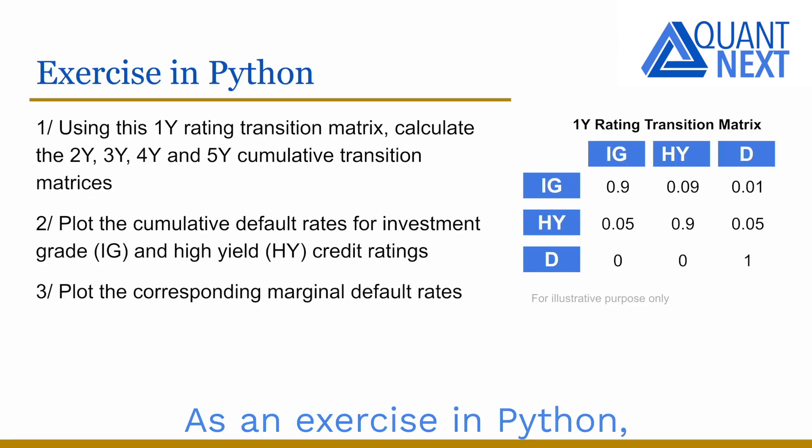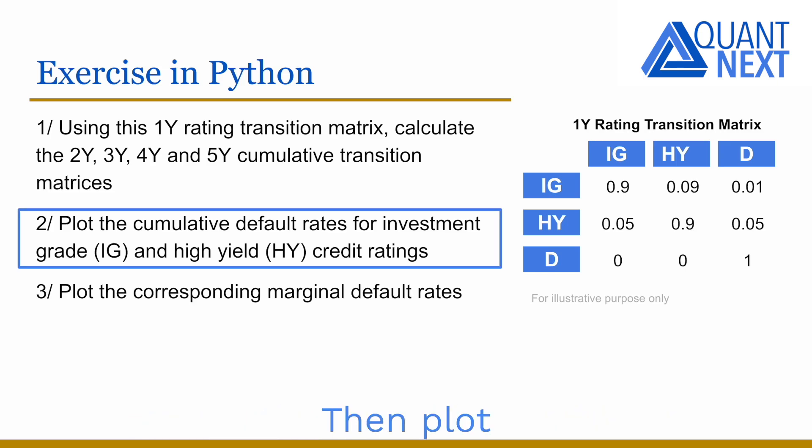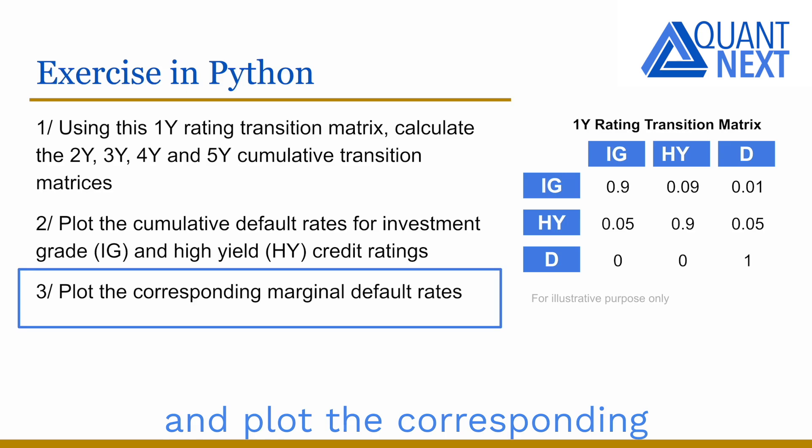As an exercise in Python, using the theoretical one-year rating transition matrix, calculate the two-year, three-year, four-year and five-year cumulative transition matrices. Then, plot the cumulative default rates for investment grade and high-yield credit ratings and plot the corresponding marginal default rates.